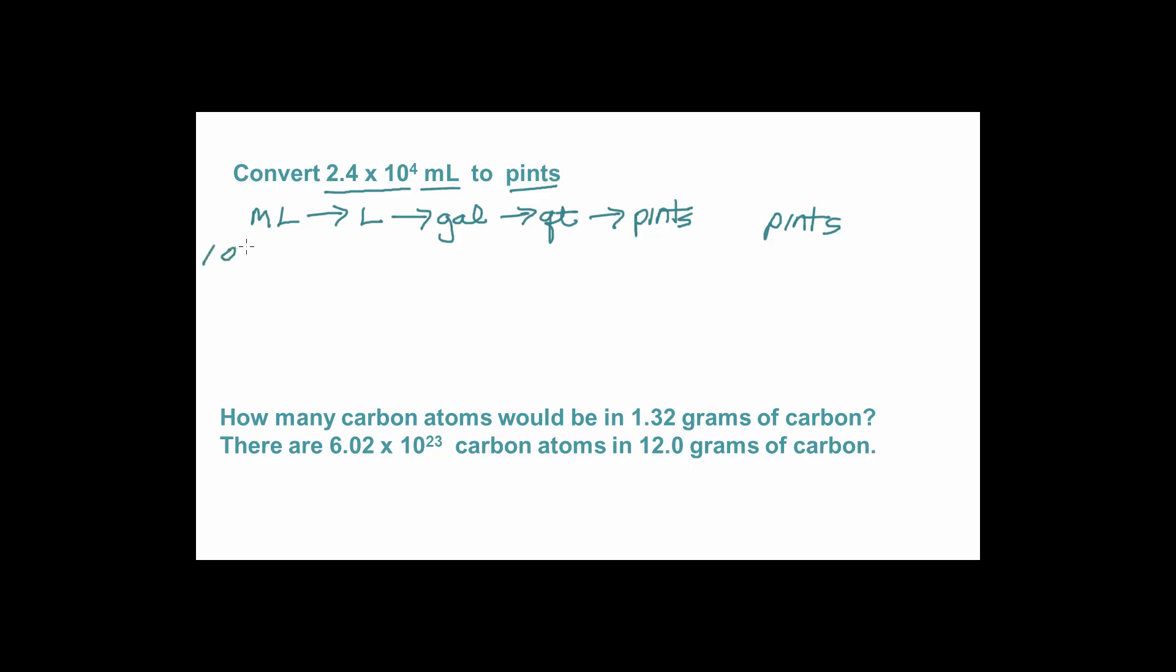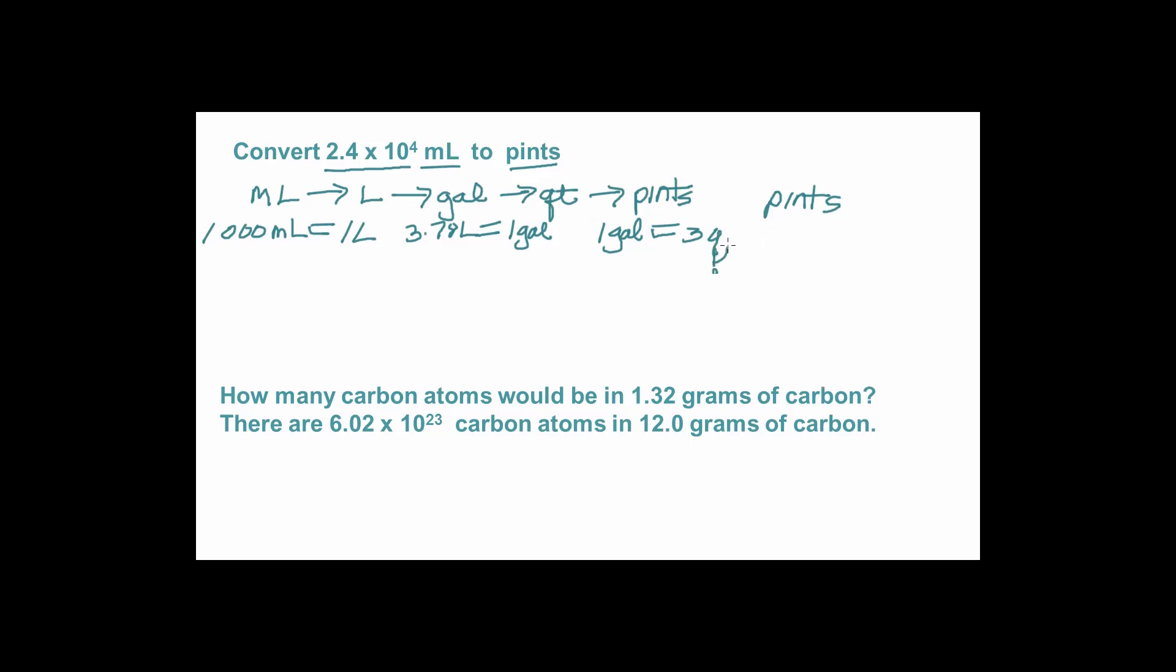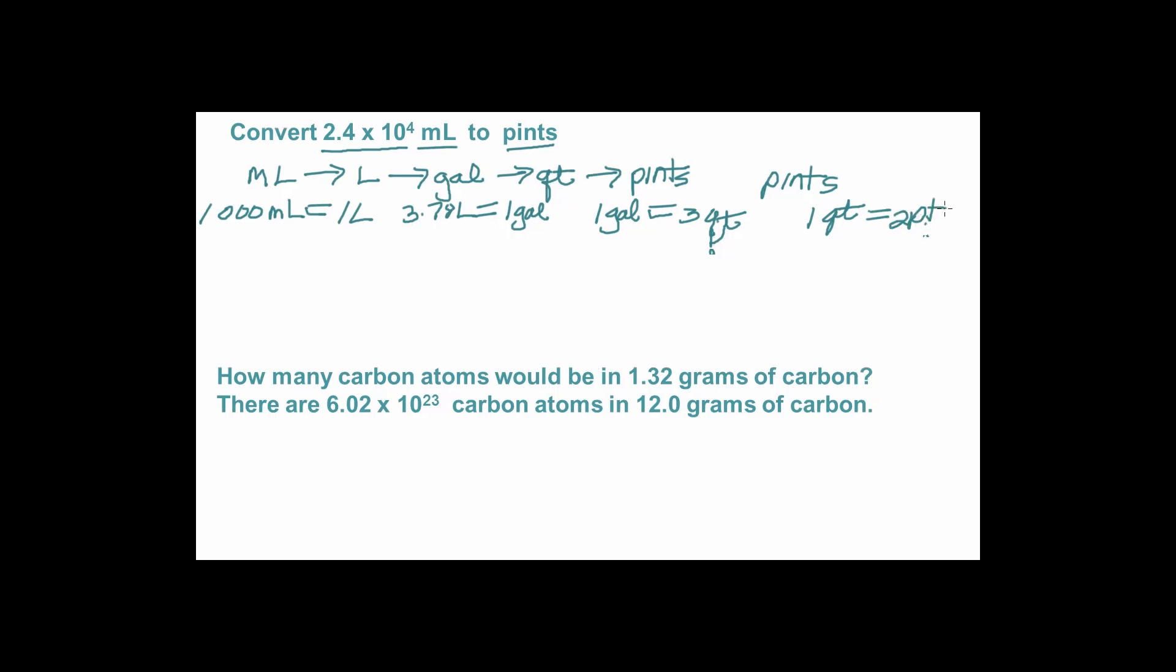So my equivalence from milliliters to liters is 1,000 milliliters is equal to 1 liter. And from liters to gallons, I know that 3.78 liters is 1 gallon. I know that 1 gallon is 4 quarts. And I know that 1 quart is 2 pints. Again, in this case, I have 4 arrows, so therefore 4 conversion factors. Somebody else might do the problem completely different, maybe with only 2 conversion factors, or maybe 10 conversion factors. As long as your equivalences are correct, then you will get the problem correct, as far as the answer goes.